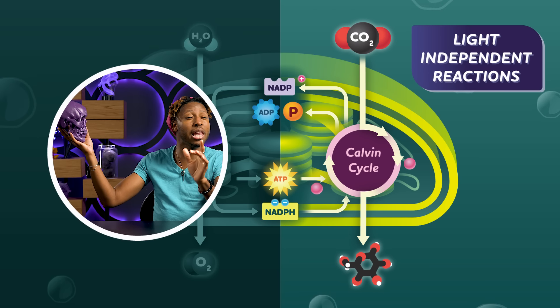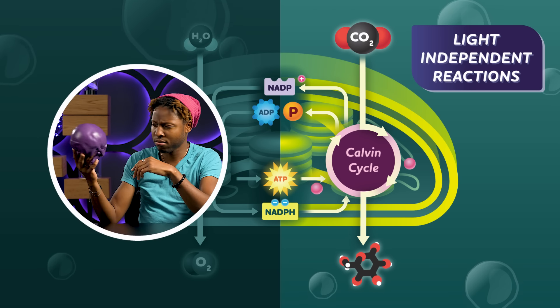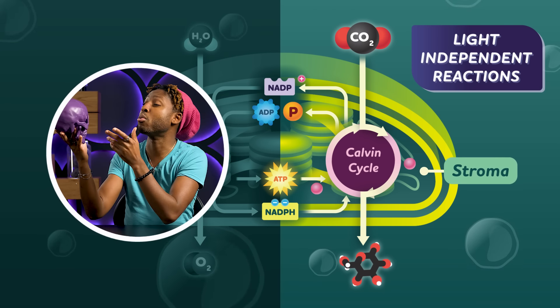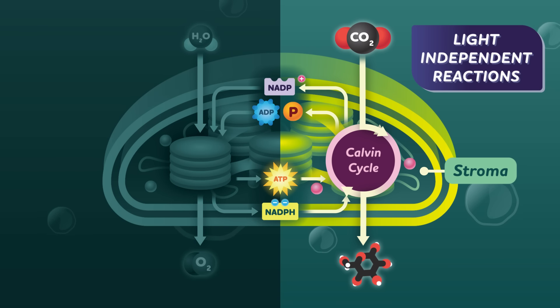Act 2. The light-independent reactions. Setting: the stroma. In this second half of photosynthesis, that carbon dioxide goes through the Calvin cycle, or the light-independent reactions.